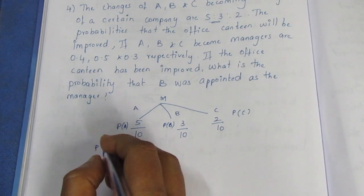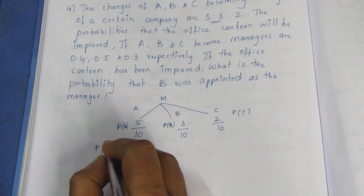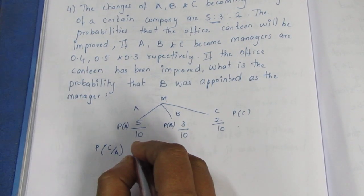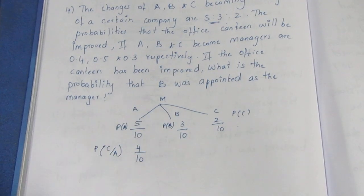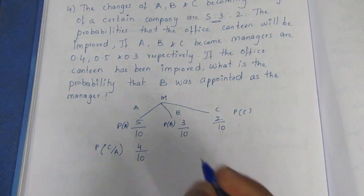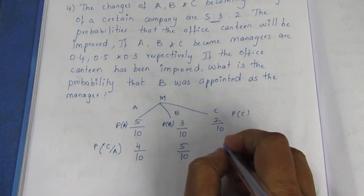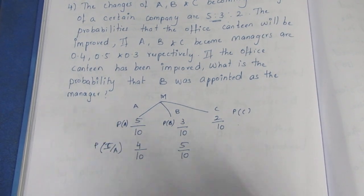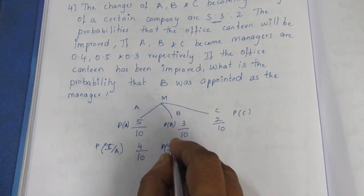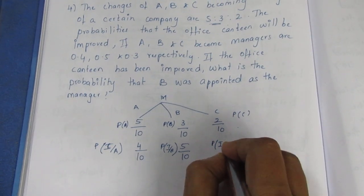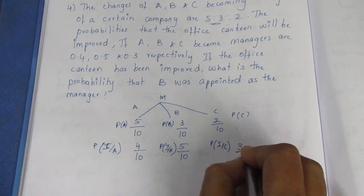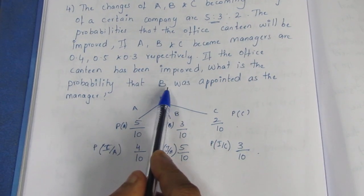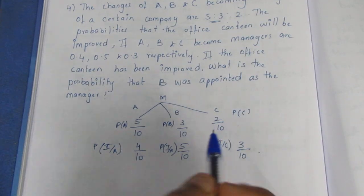The probability of improvement given A — P(I|A) — is 4 by 10. The probability of improvement given B — P(I|B) — is 5 by 10. The probability of improvement given C — P(I|C) — is 3 by 10.